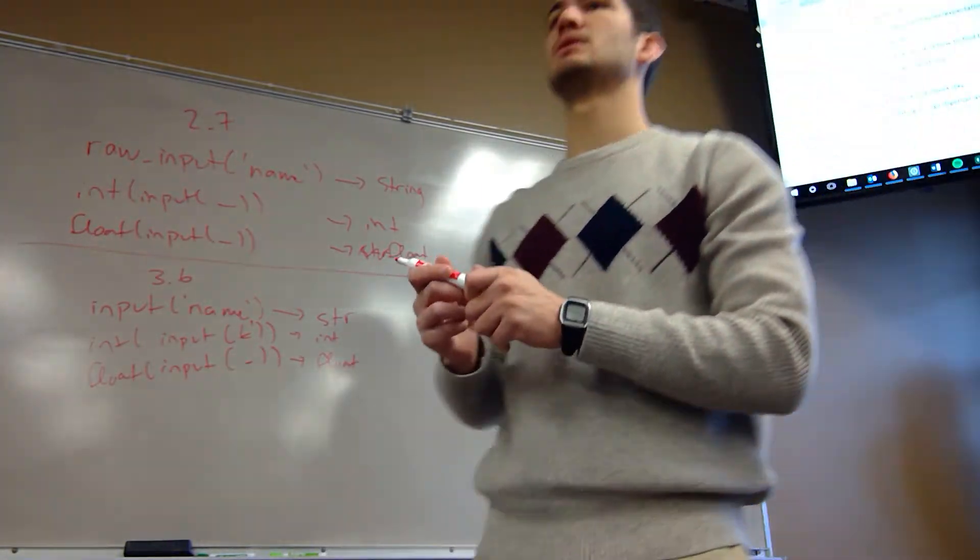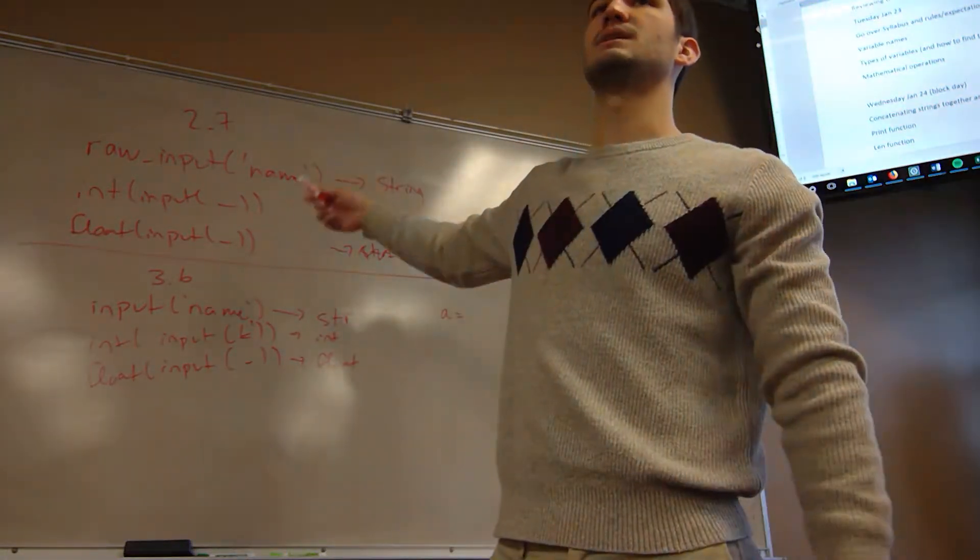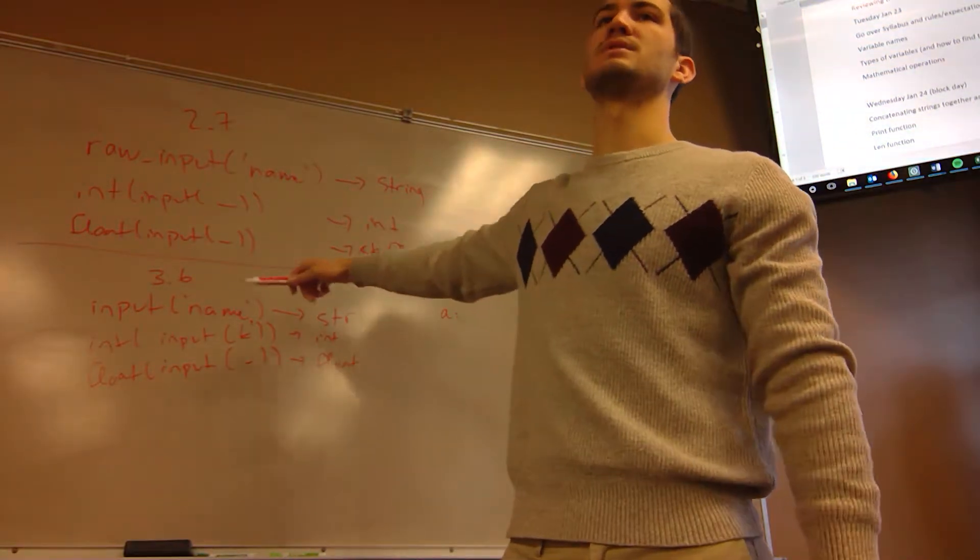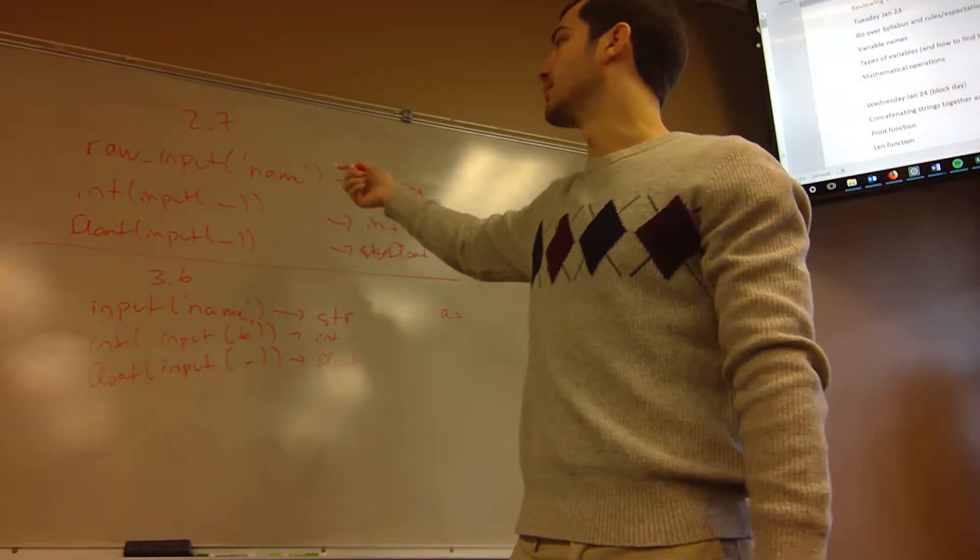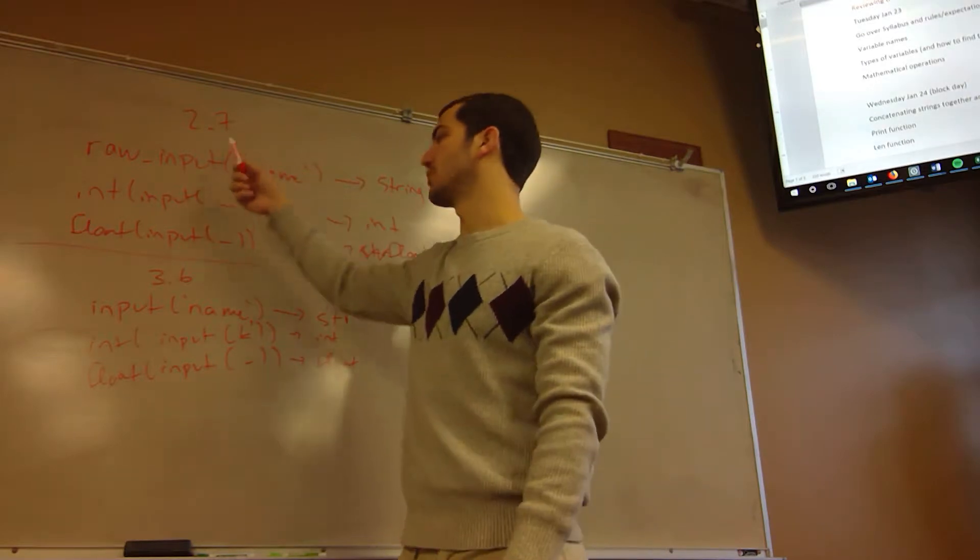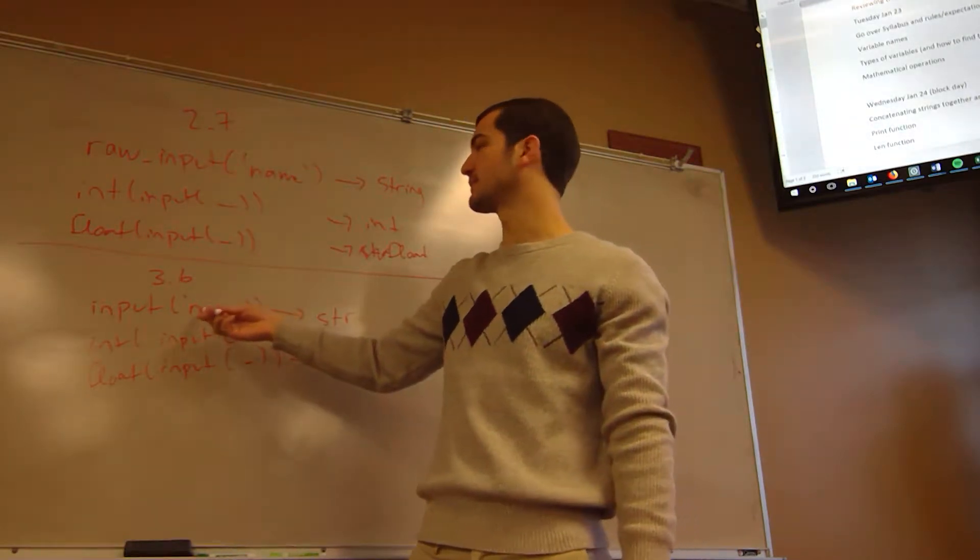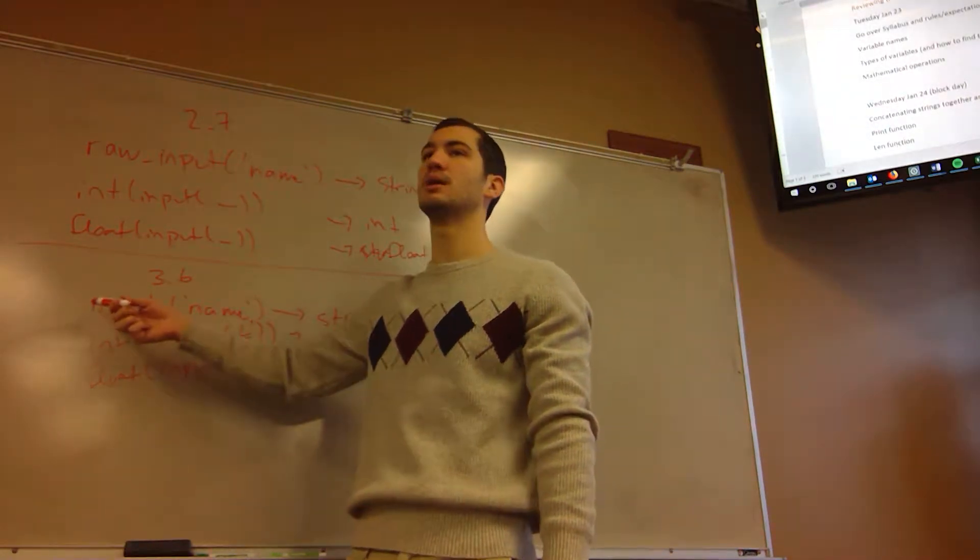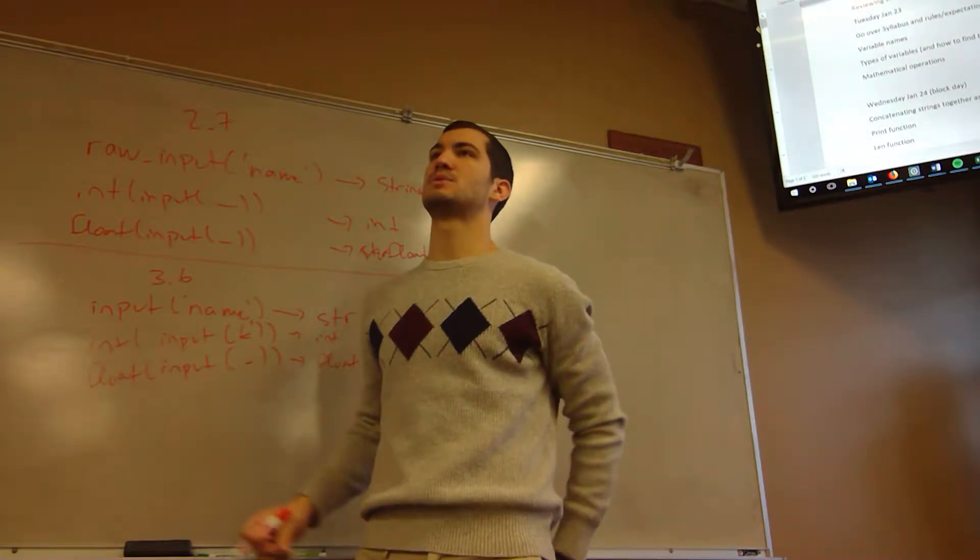Okay guys, so just going over some slight differences between 2.7 and 3.6 versions of Python. Raw input is only for 2.7, and in 3.6 you don't have to have raw input, you can just have input.